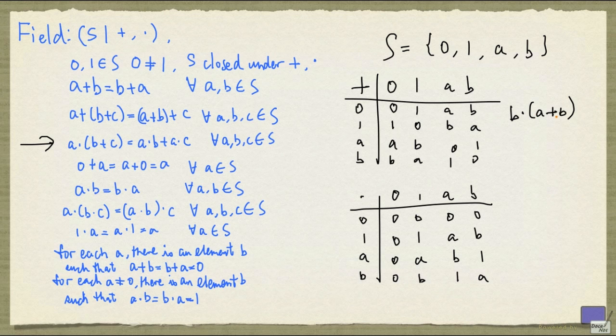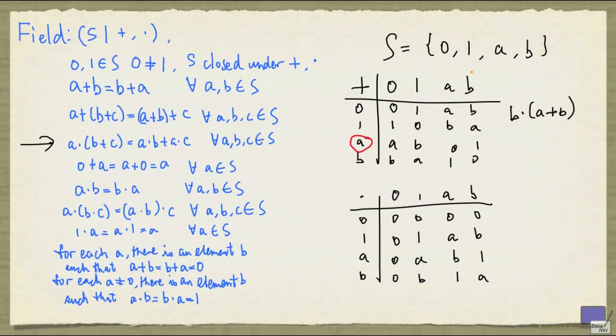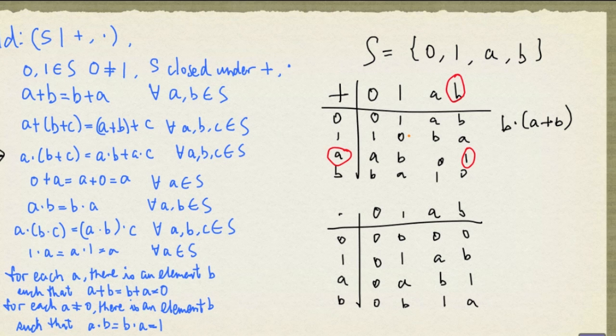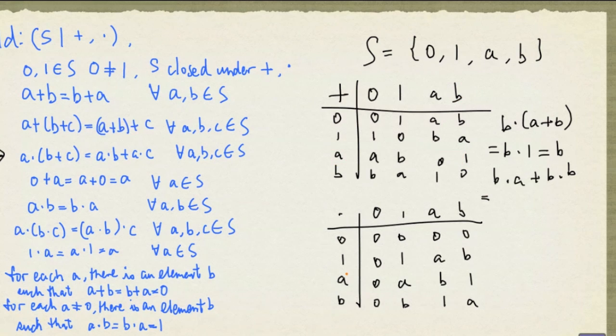Now, a plus b is given by, according to the table, 1. So I can rewrite this as b times 1, which is simply b. But what is b times a plus b times b? According to the table, b times a is 1. So this is 1.